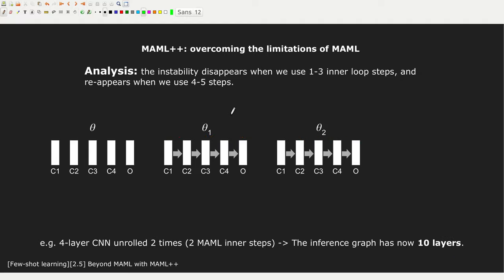Now, what's going to happen if I do two steps? MAML can update the weights with more than one step, but this introduces some problems. If I start from theta, I will have L1 on the support set to get theta 1. Then from theta 1, I can again do a forward pass on the support set and I will get theta 2 thanks to a second loss L2 on the support set. So now we have done two steps.